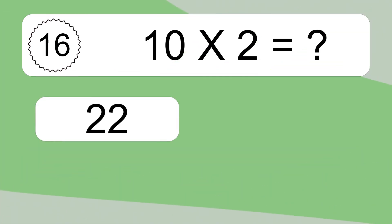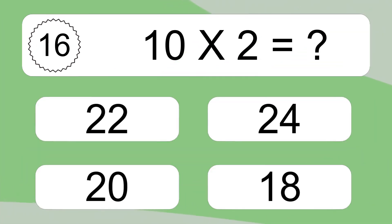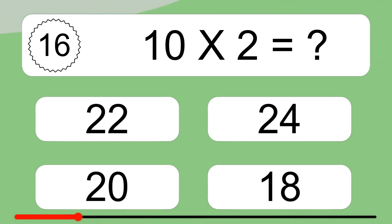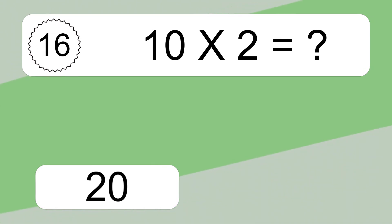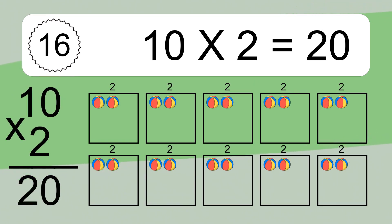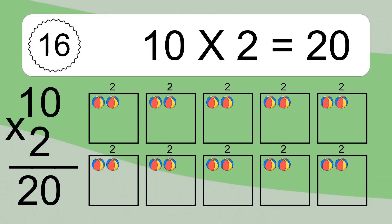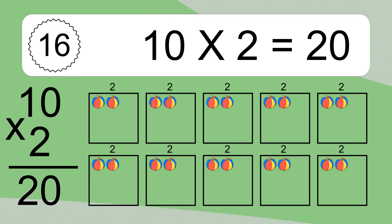10 times 2 equals what? 10 times 2 equals 20. We have 10 boxes, and each box has 2 colorful balls inside. If you count all the balls in all the boxes together, you will have 10 times 2 balls. This equals 20 balls.